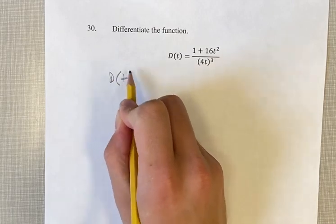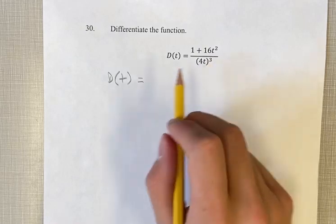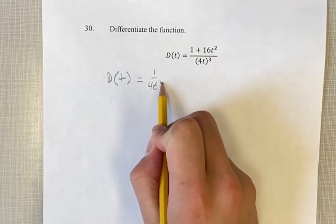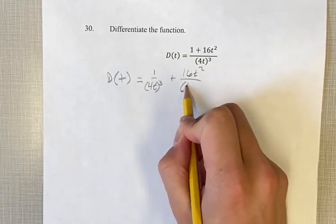Before we do anything, we're going to turn this into two separate fractions. So we're going to do 1 over 4t cubed plus 16t squared over 4t cubed.